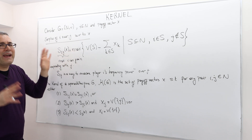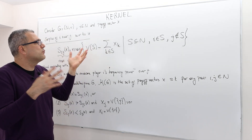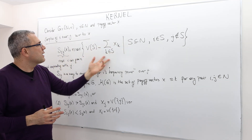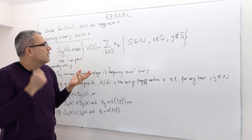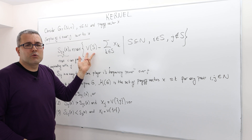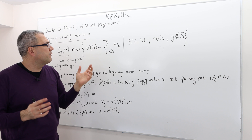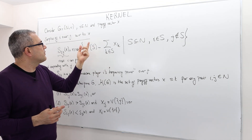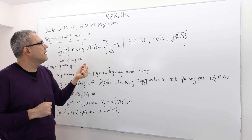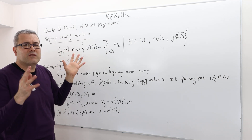So how do we define it? It's the maximum element of a set. In this set, we look at the deficits — the worth of the coalition S minus the total payoff this coalition S gets with respect to the payoff vector x. This deficit can be positive, negative, or zero. We take the maximum deficit.